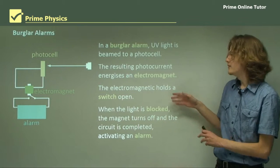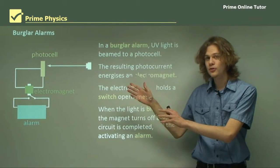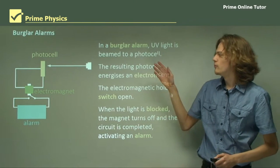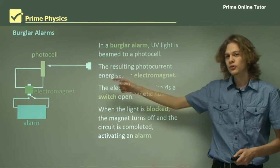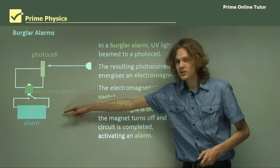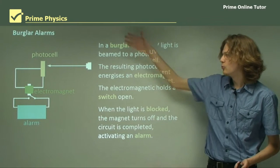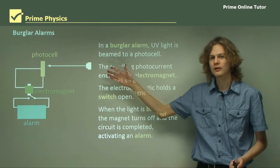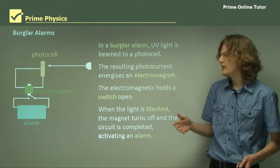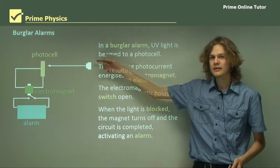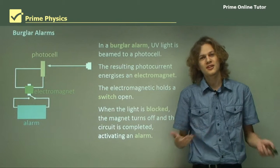So when the ultraviolet source is blocked, the photocell stops producing a photocurrent, the electromagnet stops being a magnet, and the spring-loaded switch suddenly closes. This completes the bottom circuit and activates the alarm. We can tell when, say, a burglar has walked across the ultraviolet light source. There's usually also some extra circuitry that means even once the light continues to activate the photocell, if the alarm started going off, it will continue to go off.